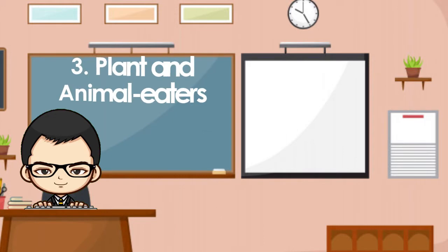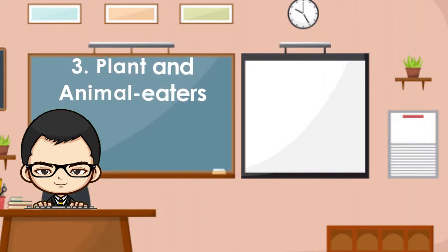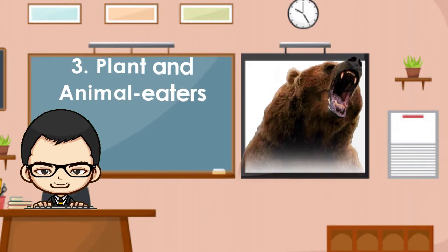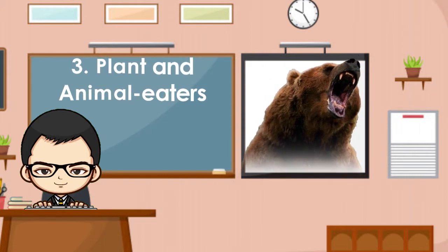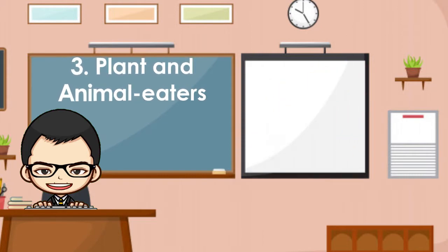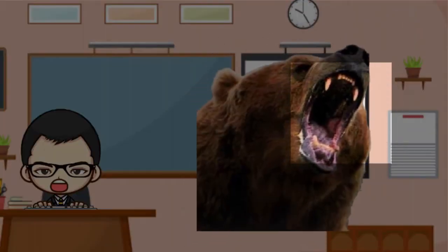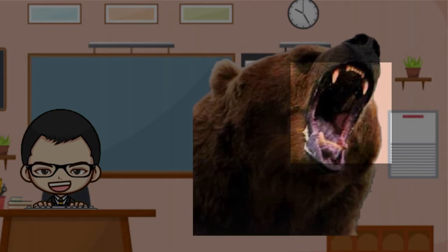Third, plant and animal eaters. Animals such as bears and mice eat both plants and animals. Look at the bear — it has sharp teeth to tear meat and flat teeth to chew fruits.